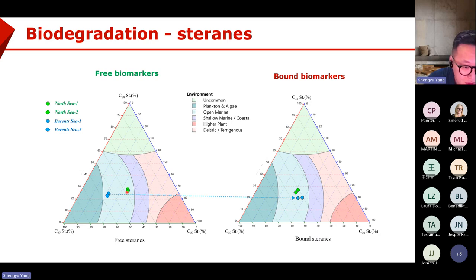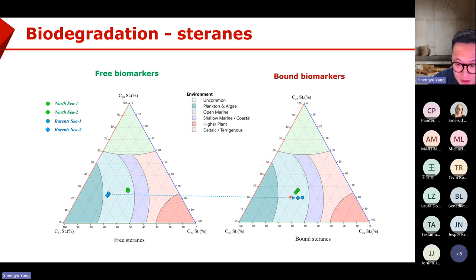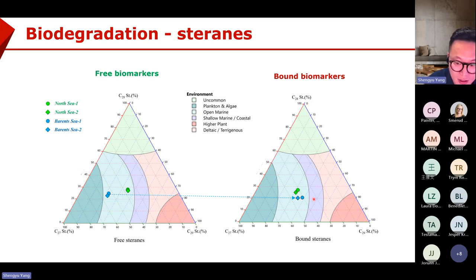In the ternary diagram, the fresh sample and biodegraded sample are separated from each other. If we check the bond biomarkers, in fact they were deposited in a relatively similar environment.